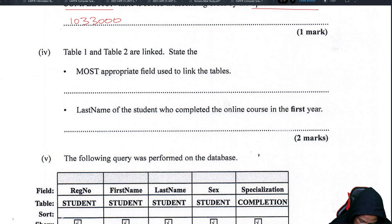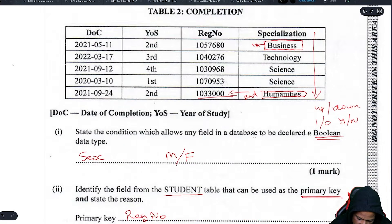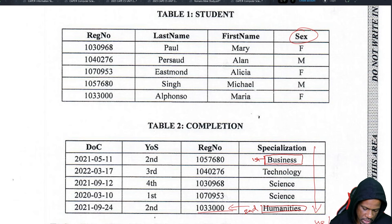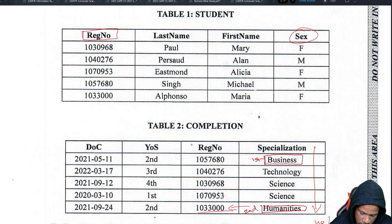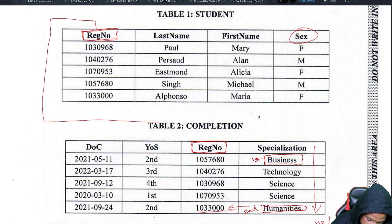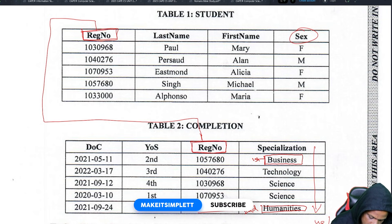State the most appropriate field to use to link the two tables. This is about primary key and foreign key. You look for a field that repeats in both tables — in this case, registration number appears in both. The registration number here relates to the registration number in the other table in a one-to-many relationship.